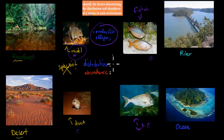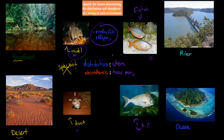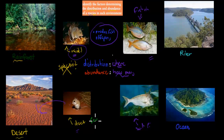Distribution means where we can find something, and abundance is how many. For example, the Australian spinifex hopping mouse — where can we find it? In a desert. And how many? Not too many, just a few, because of different factors such as food availability, competition, and the like.